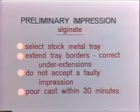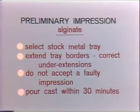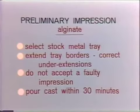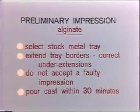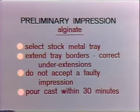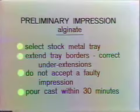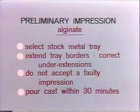Now I would like to go to the chair and start the sequence of obtaining impressions for a complete denture patient. To begin with, we will take an alginate preliminary impression. We'll select a stock metal tray and extend the borders with wax to correct for any under-extensions. When we have obtained a good impression, we'll pour the model and proceed to make a final impression tray.